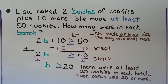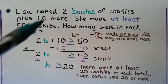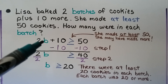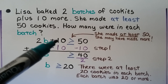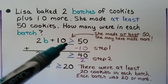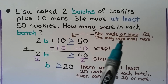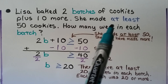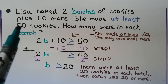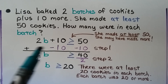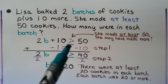Lisa baked 2 batches of cookies plus 10 more cookies. We don't know how many are in a batch, but she made at least 50 cookies. How many were in each batch? There were 2 batches times some amount of cookies in each batch, plus the 10 more cookies she made, and that's going to be greater than or equal to 50 — because she made at least 50; she may have made more. So we use a greater than or equal to sign.